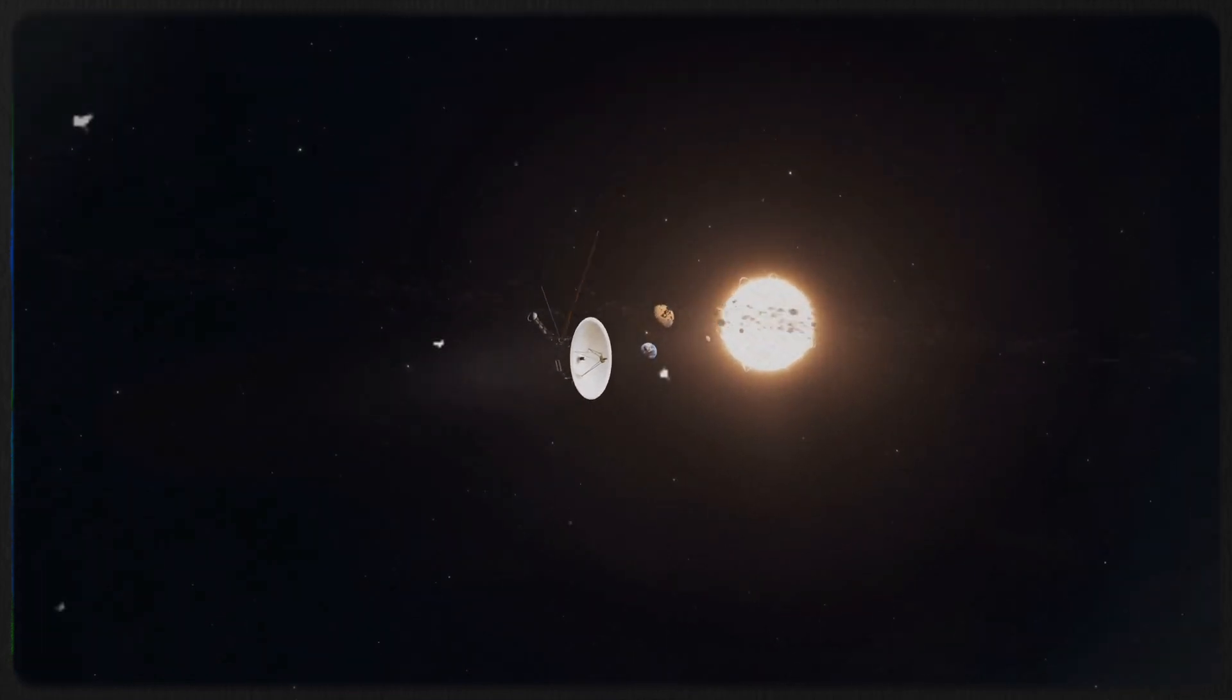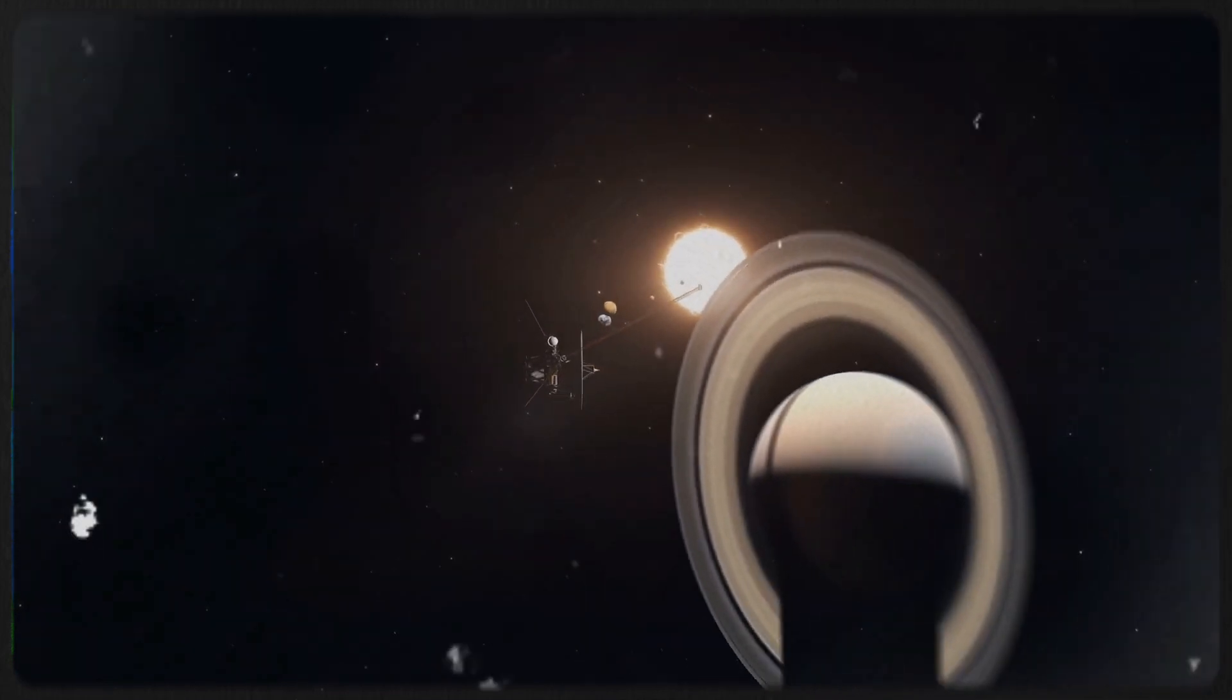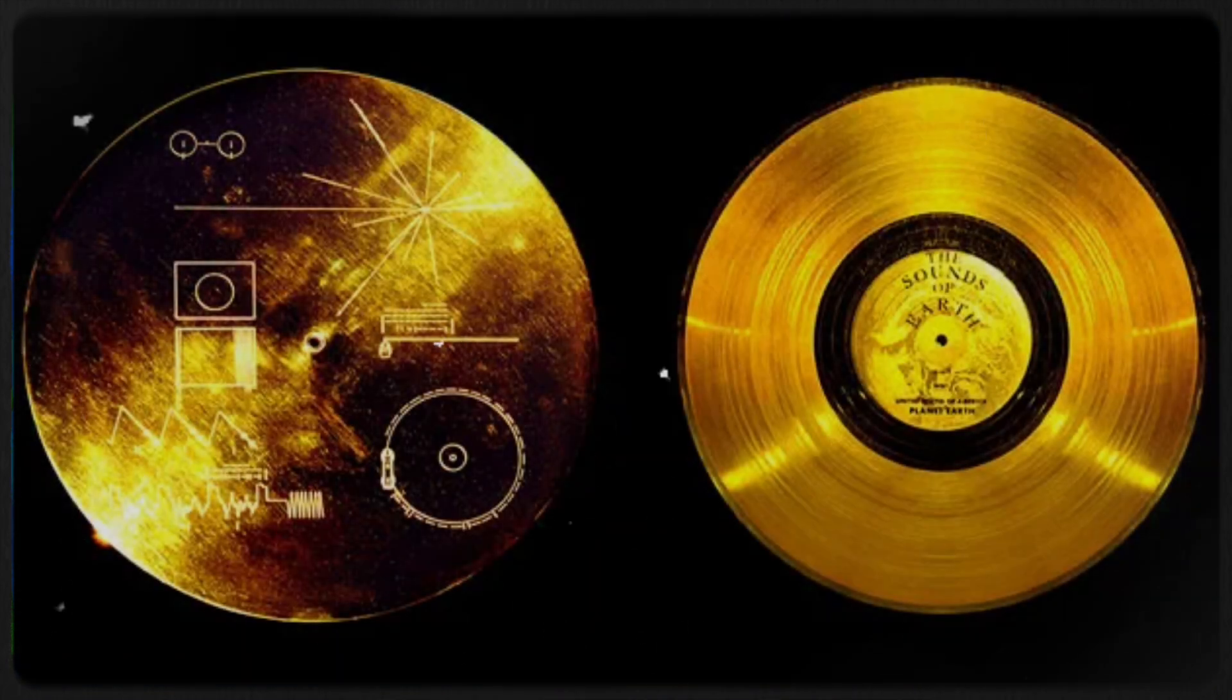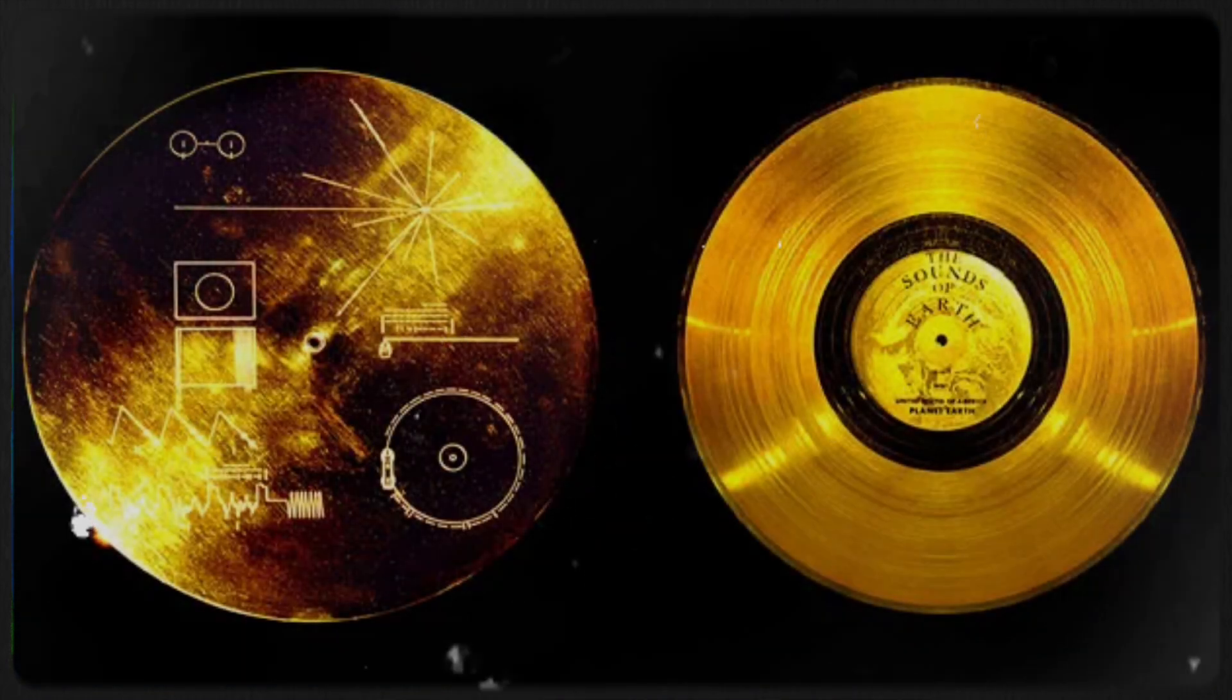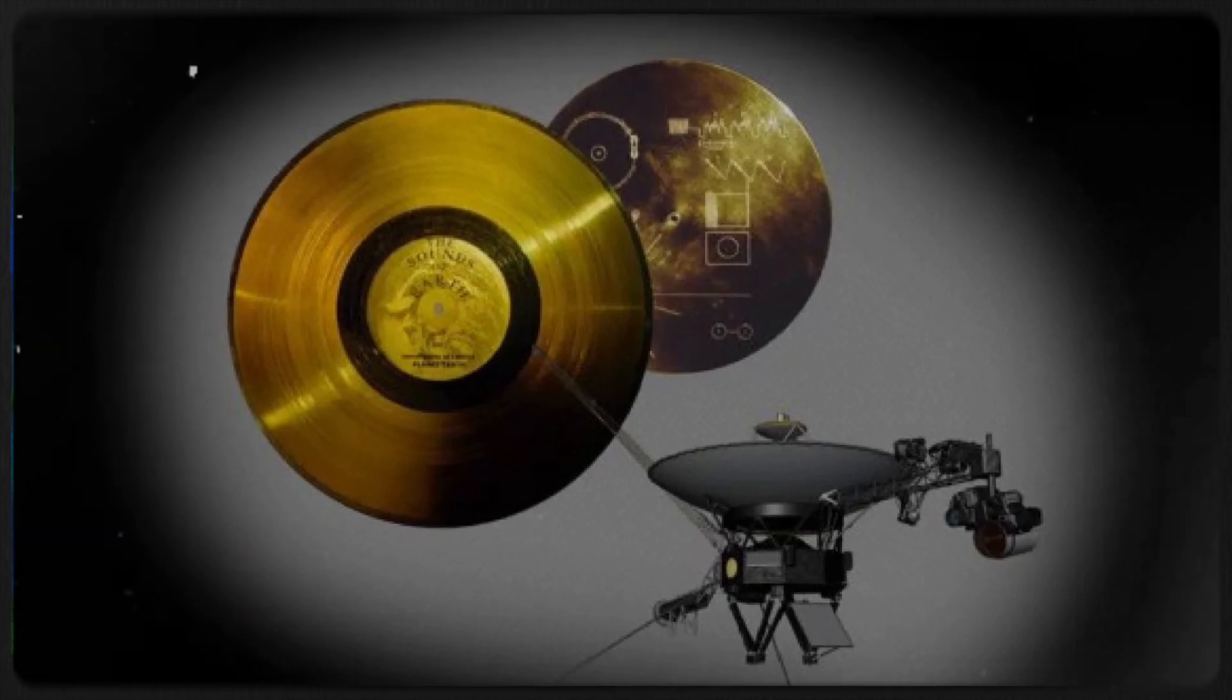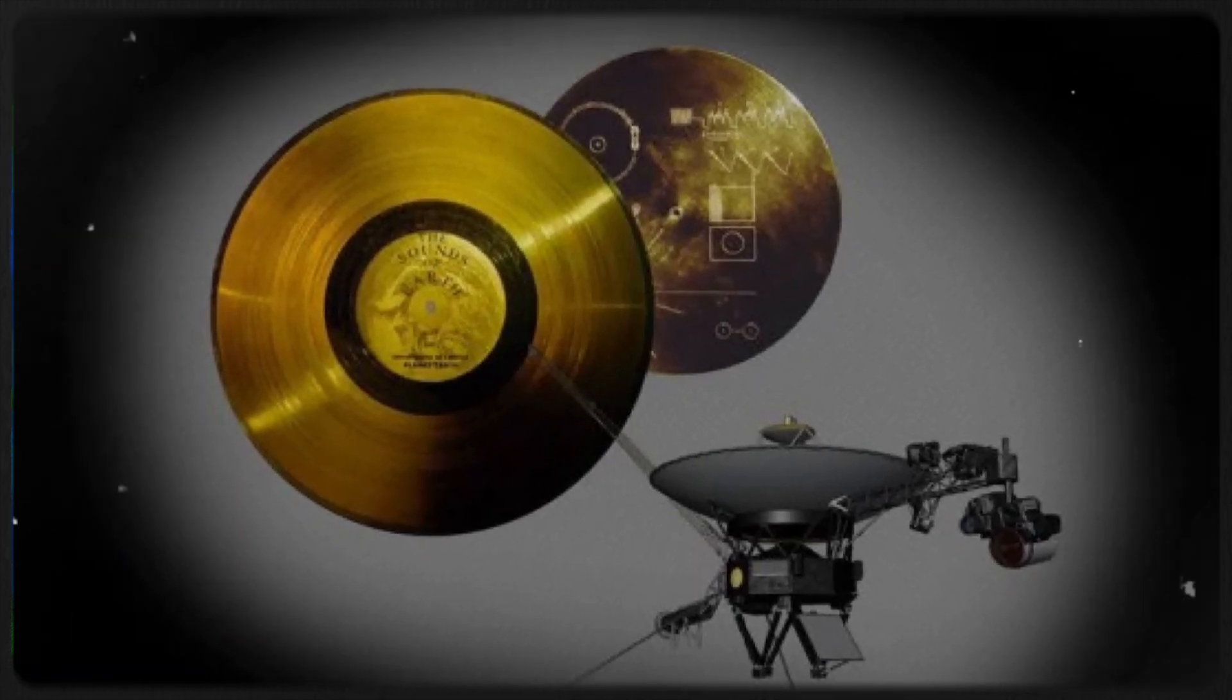This message is stored on two recordings, a type of technology from another era, but not your typical plastic discs. These are made of copper, coated in gold, and enclosed in aluminum. Known as the Golden Records, their grooves encode images and sounds meant to provide a sense of the world the Voyagers came from.